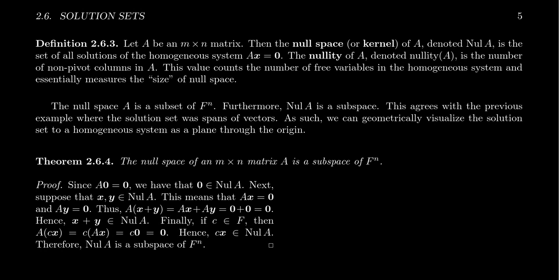Consider an M by N matrix A. We define the null space of the matrix A, which we'll denote NUL of A — the null space. This is going to be the solution set to the homogeneous system AX equals zero. Sometimes this null space is called the kernel by some people, which if you've been following along this series, the kernel is something to do with linear transformations. Well, there is a connection between linear transformations and matrices.